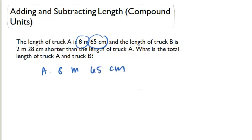The length of truck B is 2 meters and 28 centimeters shorter than the length of truck A. So to get B, that's minus 2 meters 28 centimeters from truck A.